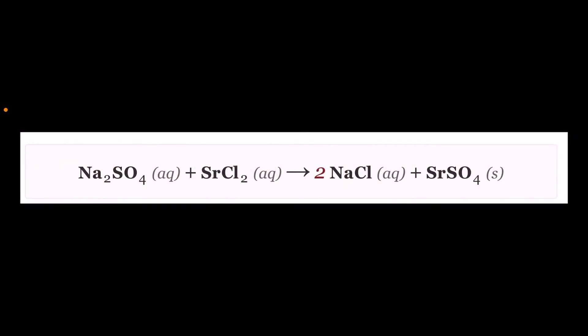So what's going on in this beautiful precipitation reaction that reminds me so much of a snow globe? You start out with the reactants, sodium sulfate and strontium chloride. That's the Na2SO4, the sodium sulfate, and the strontium chloride, the SrCl2. Both of those are in an aqueous solution. But when you combine them, they trade places.